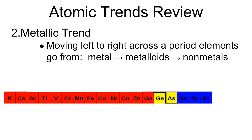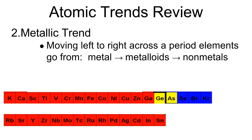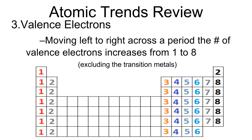The same thing happens in period five — metals, metalloids, nonmetals — becoming less metallic as I move to the right. The final trend we learned about was valence electrons: as I move from left to right across the period, the number of valence electrons increases from one to eight.